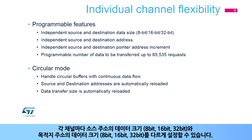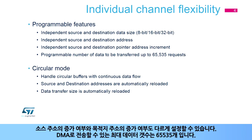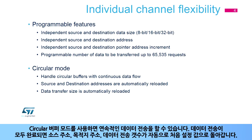For each channel, the source and destination data size format is independently configured for 8, 16, or 32-bit packets. The source and destination address and pointer increment are also independently configurable. The transfer data size can be pre-programmed up to 65,535. Circular buffer mode is available to support a continuous flow of data, with source and destination addresses and the number of data to be transferred automatically reloaded after each complete transfer.